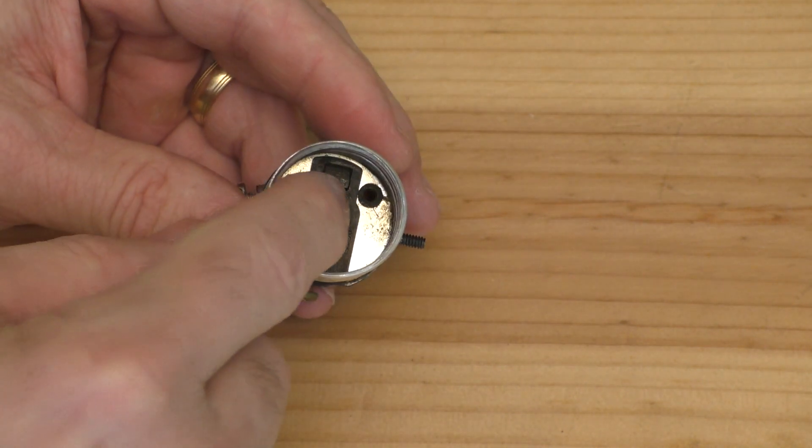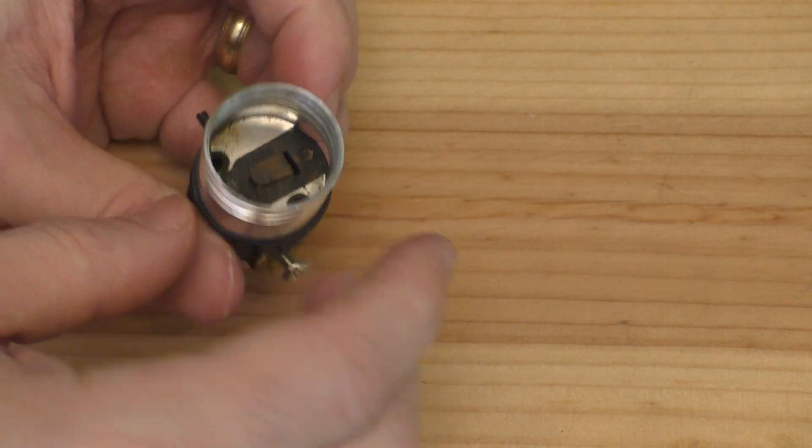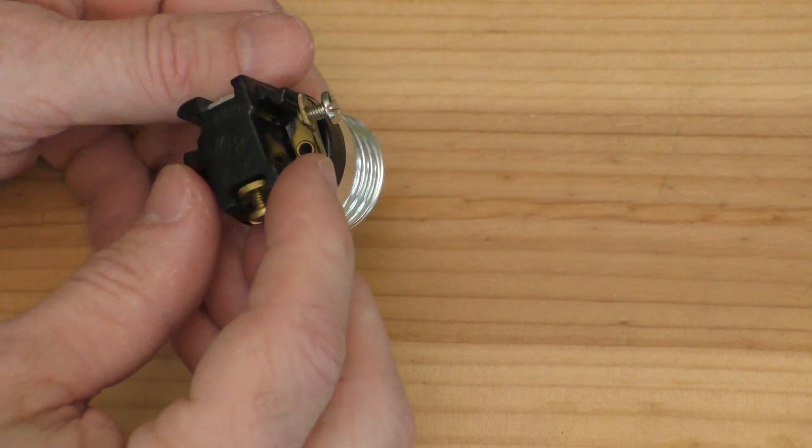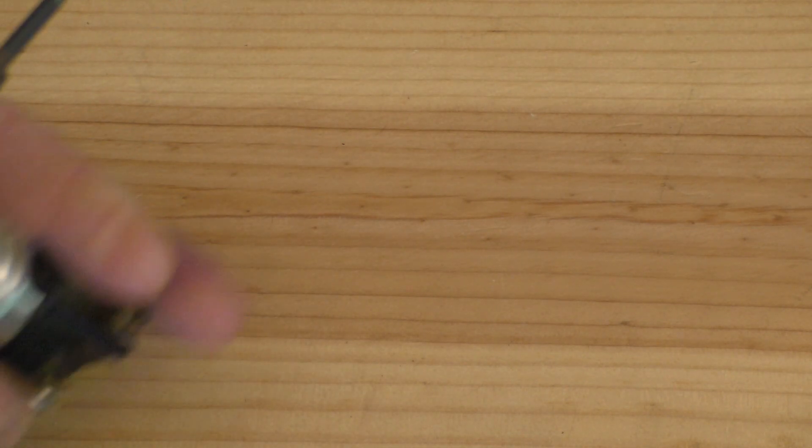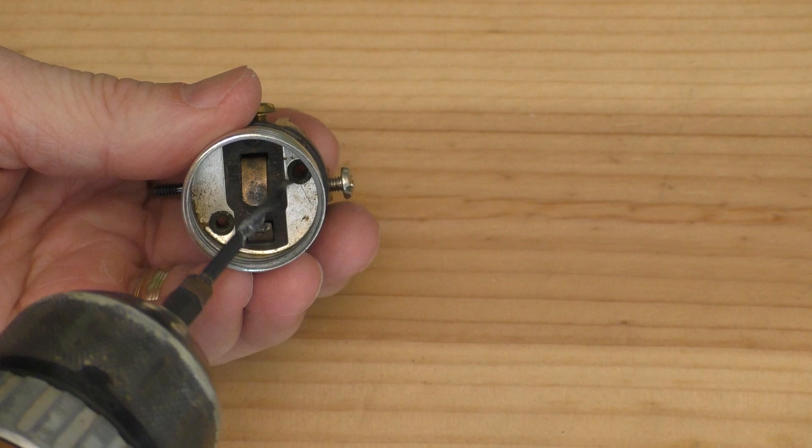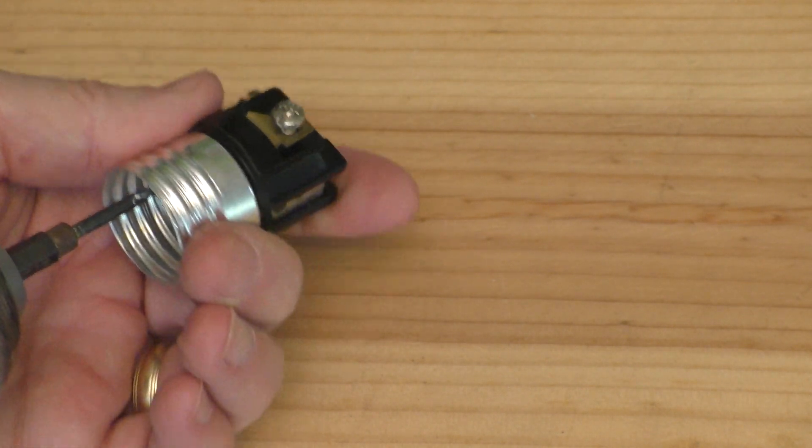Now looking at it, it looks like it has two little connectors, two little rivets right there—one right there, one right there. They're not screws, so I'm going to have to drill those out. Let me go ahead and take my drill, very carefully stick it in this hole right here, and see if I can drill this out.